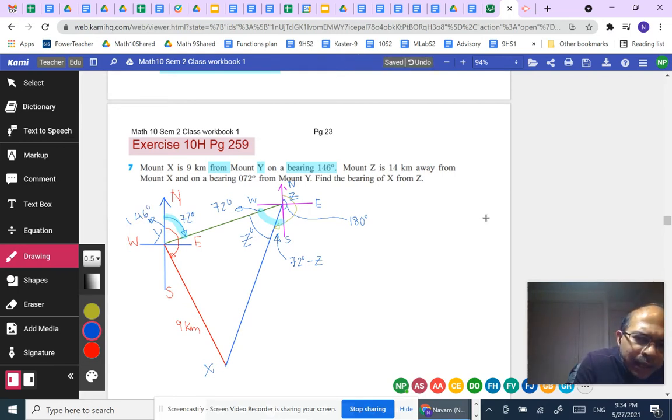Since the angle in blue is 72, then the remaining angle here inside the triangle, which is really angle Y, is 146 minus 72, which gives you 74 degrees. There is possibly no other information other than the fact that the distance from X to Z is 14 kilometers as given in the problem.